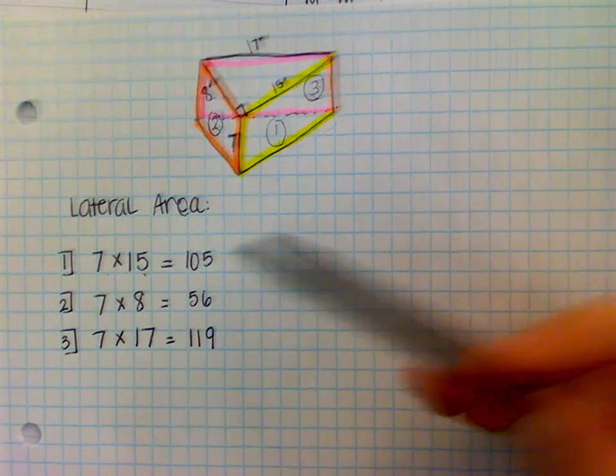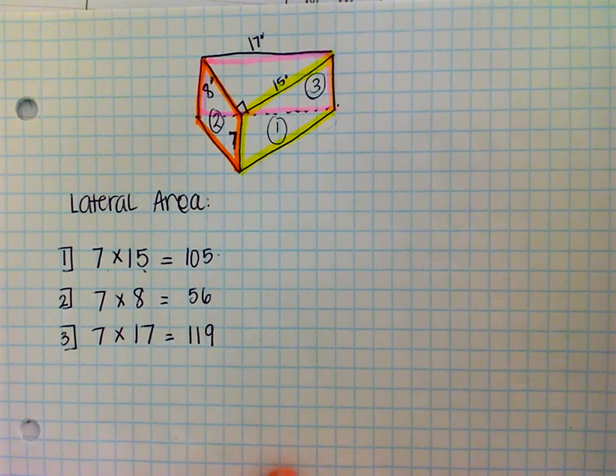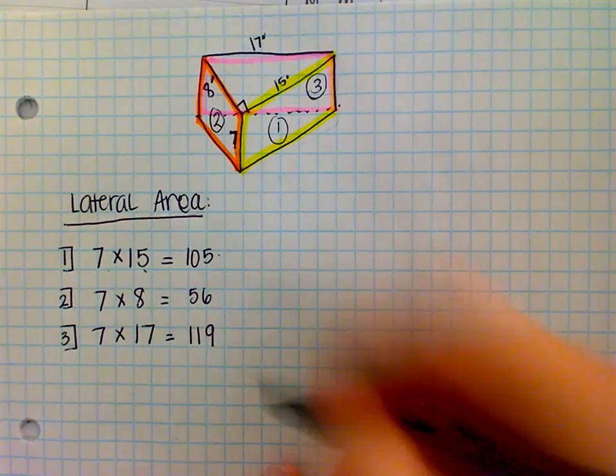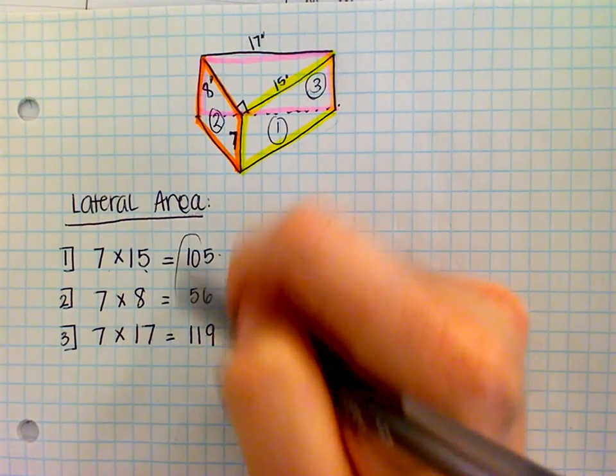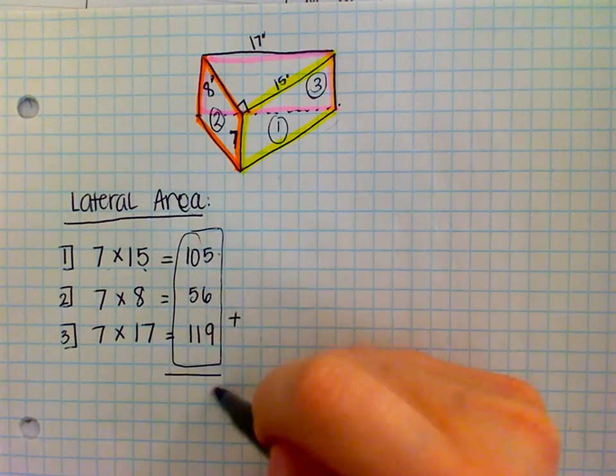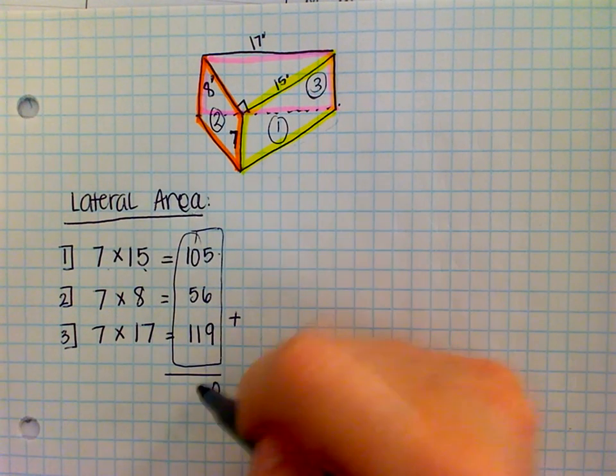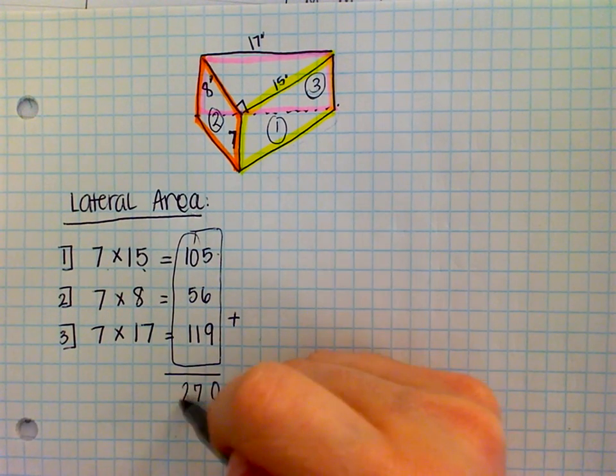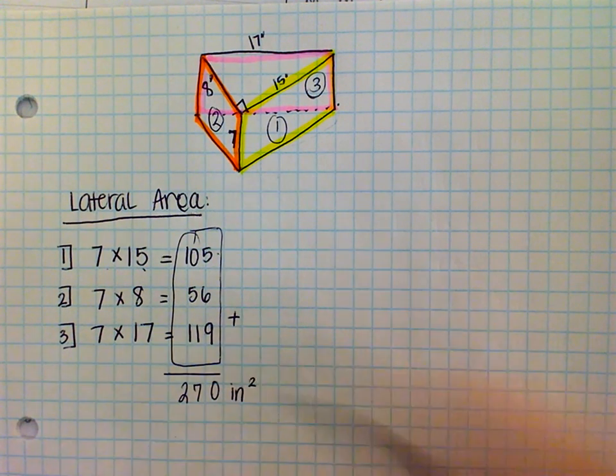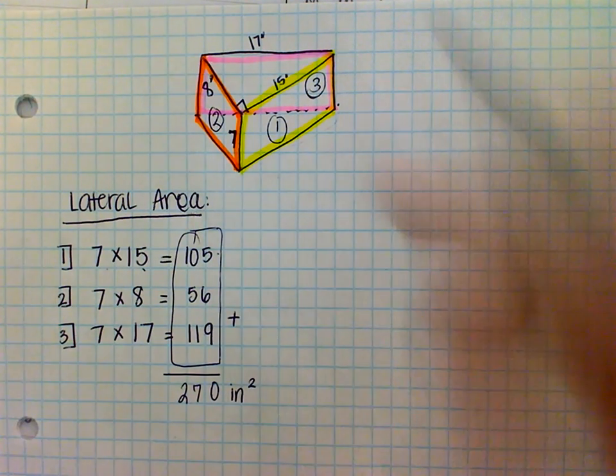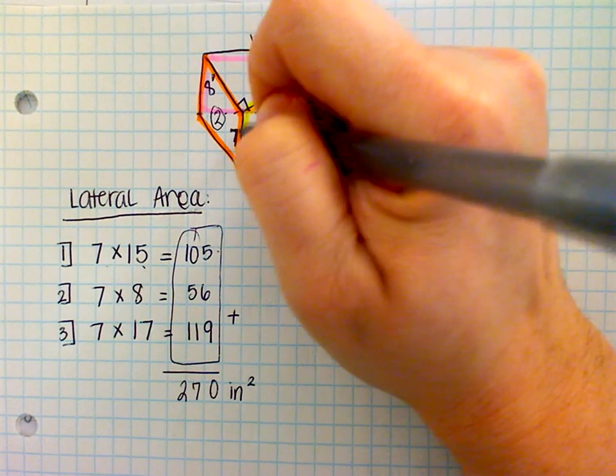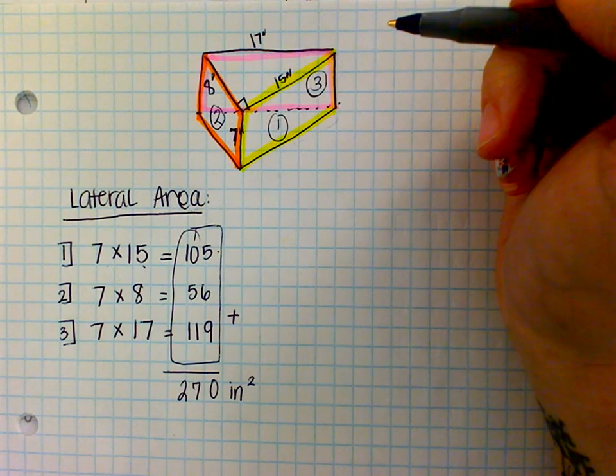And what do we do with all of the faces now in order to find the lateral area? Ryan? Add them up. Add them up. So, I'm going to add all those together. I get 270 inches squared. Remember, our picture was labeled with inches. That's what those two little hash marks mean. That's the lateral area.